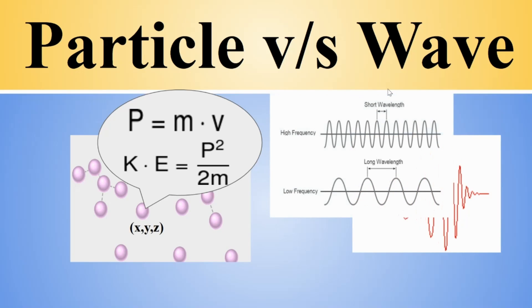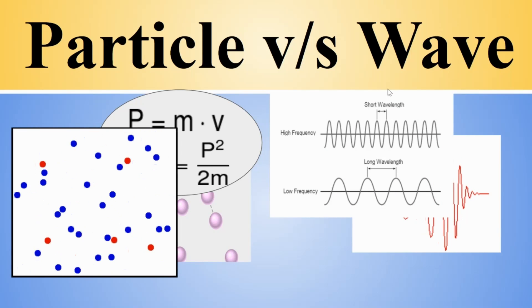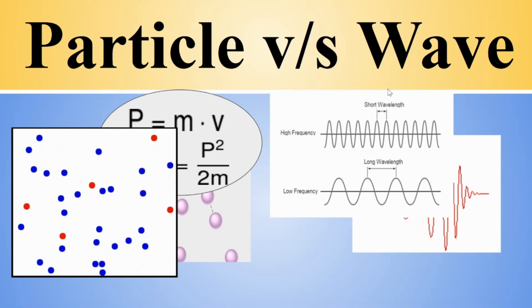For particles, if two particles meet, what will they do? They will either collide or run away. They are not running into each other. They are not even to superpose at the same position.